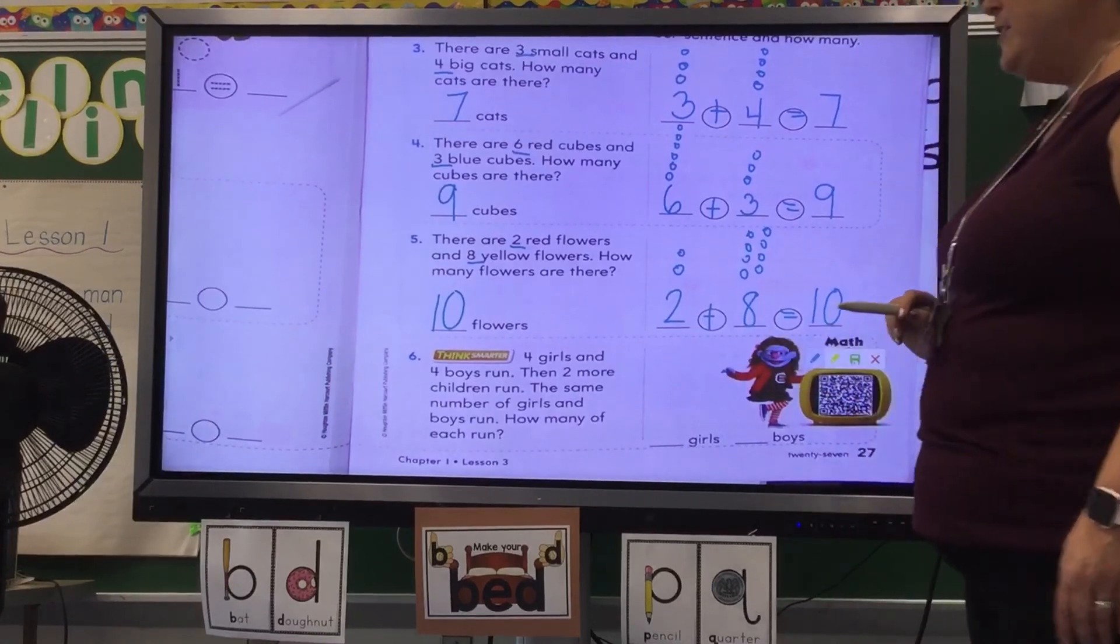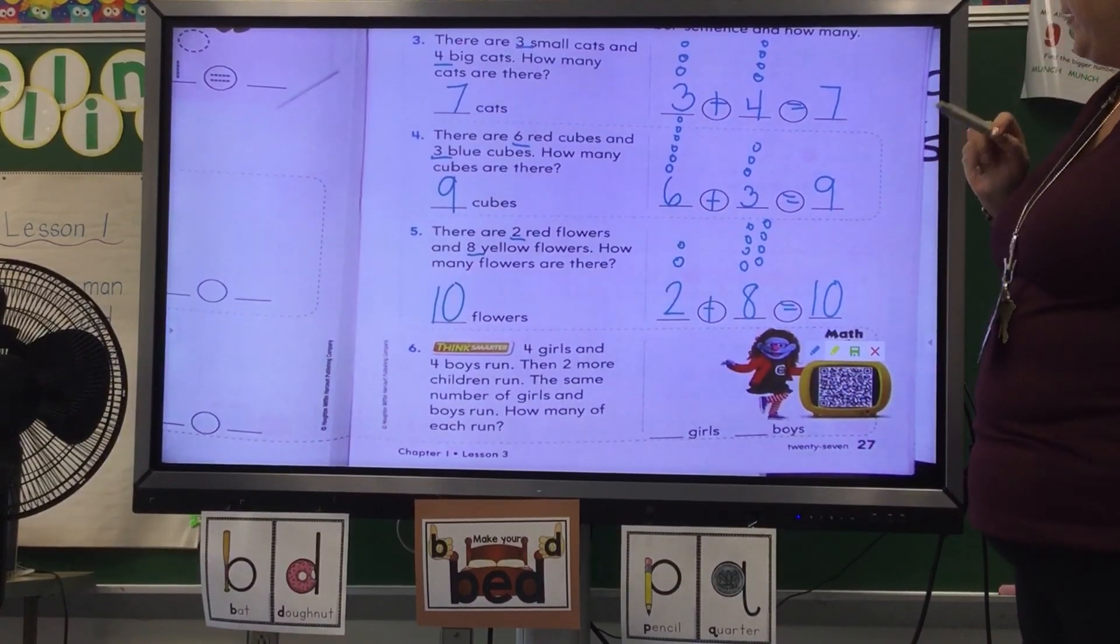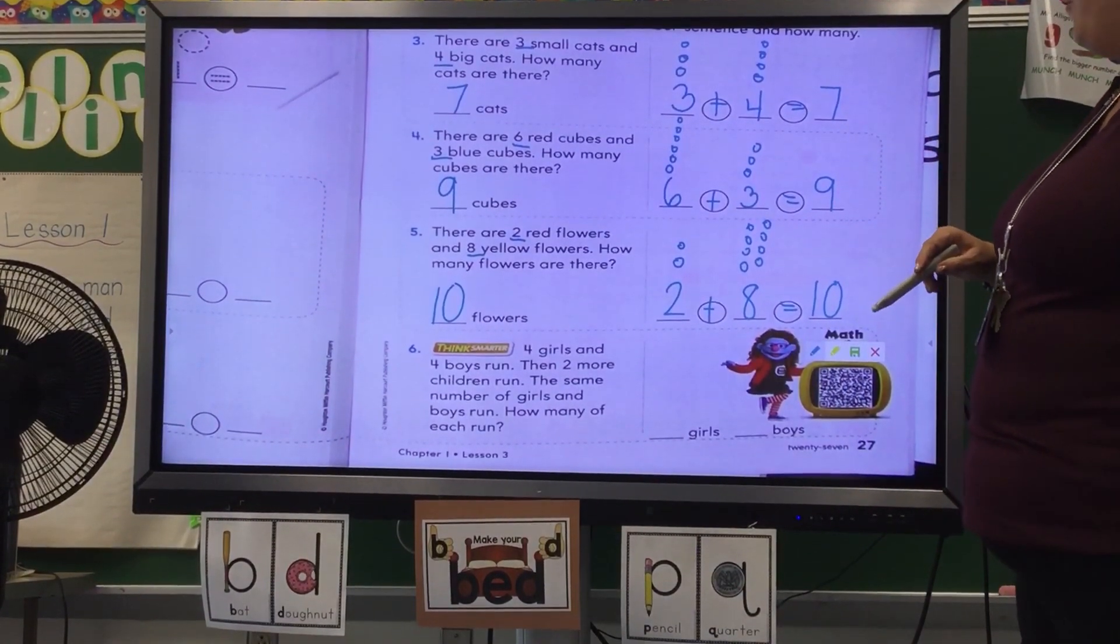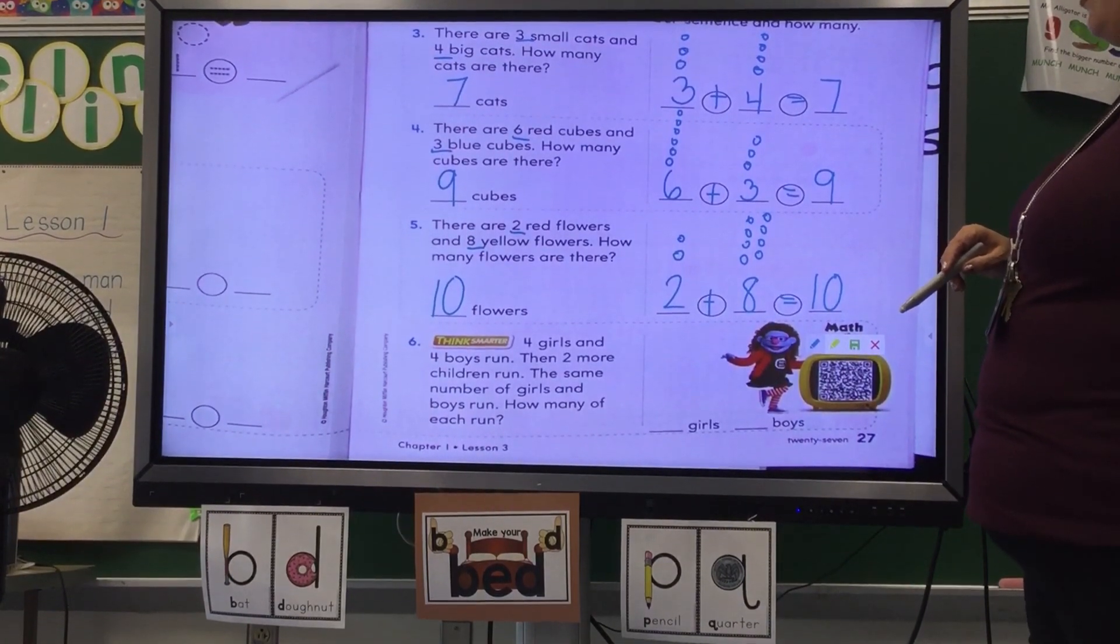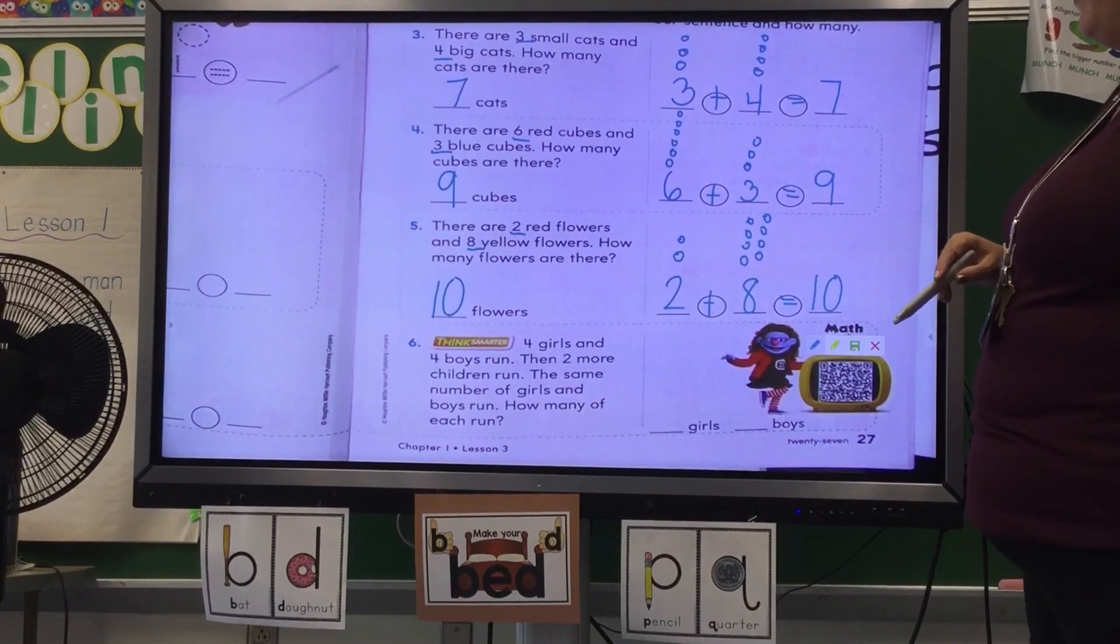Okay. Now the think smarter. These are always a little trickier, but you guys are smart. You can do it. Four girls and four boys run. Then two more children come. The same number of girls and boys run. How many girls and boys run?